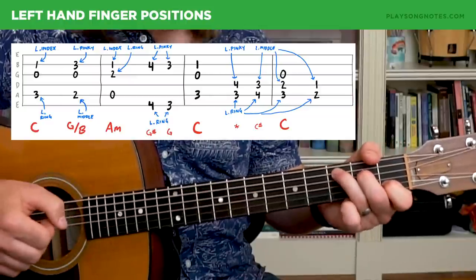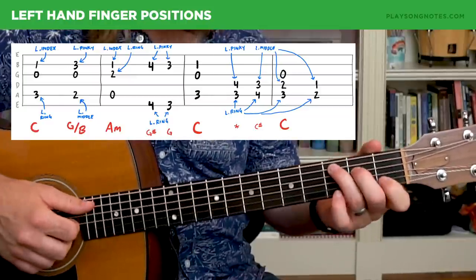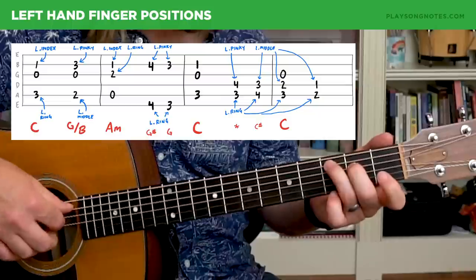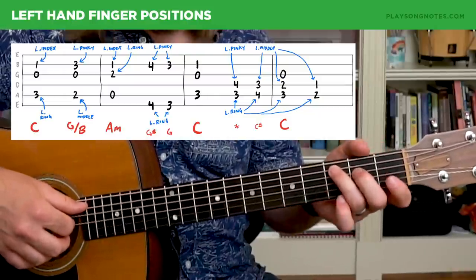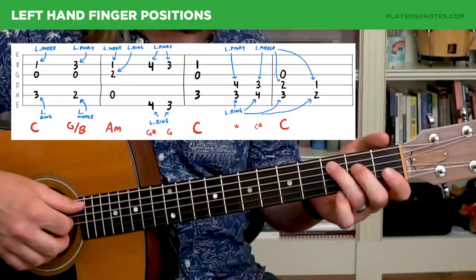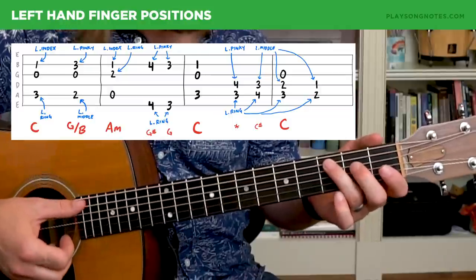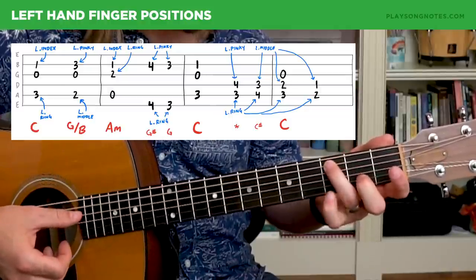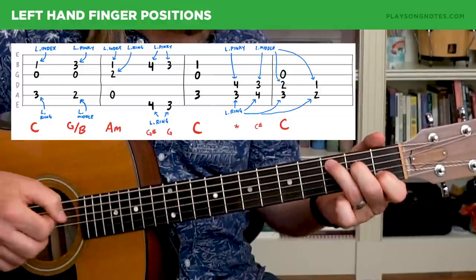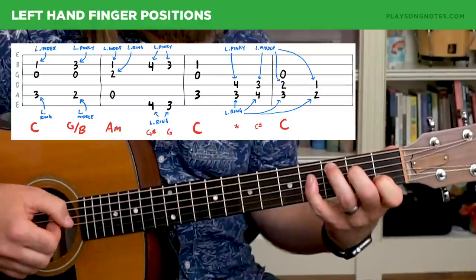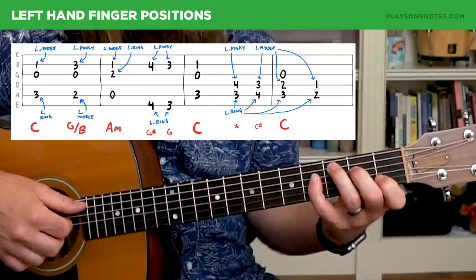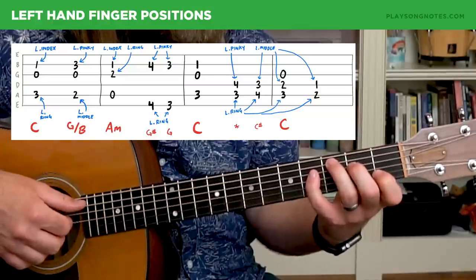Then we're going back to a C. And now this next part is tricky. So we're only playing the fifth and fourth strings here. But notice how for this first chord, I don't know what you would call this one, but basically you want your ring finger where it would normally be for a C. And the way I think of this chord is I'm in a C position and I'm basically putting my pinky down on the fourth fret of the fourth string.